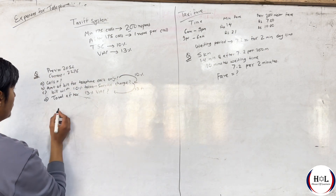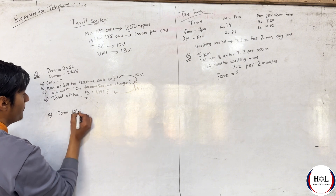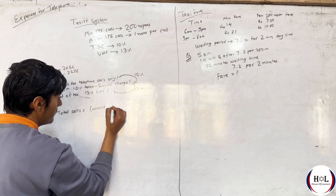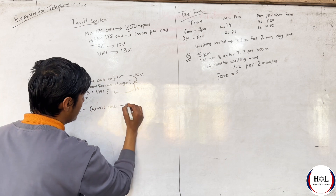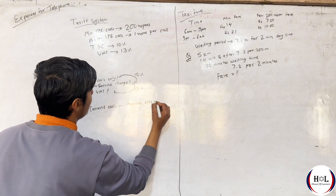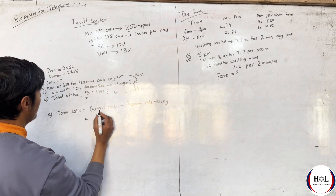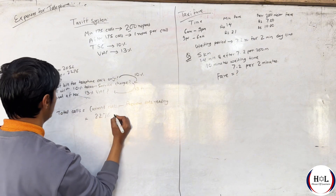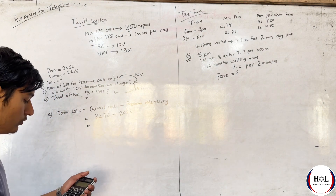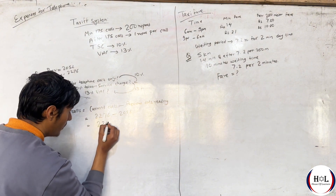What is the number of calls? The number of calls is printed at the time. The number of calls is 276 minus 2052, which is 224 calls.